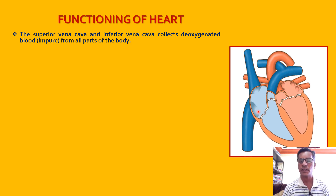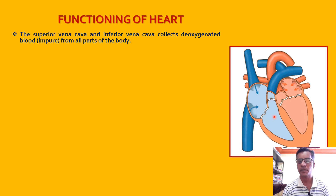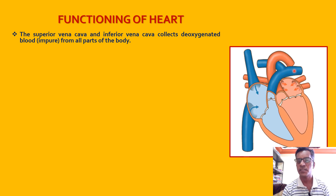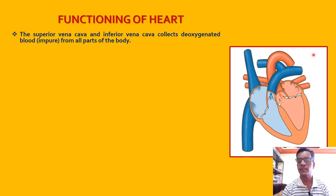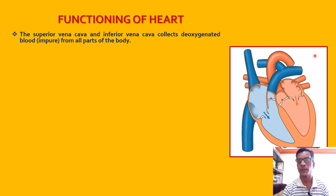The deoxygenated blood is present in the right auricle. On contraction, the blood moves into the right ventricle through a special structure called the tricuspid valve, which allows blood to flow in one direction. As the right ventricle contracts, the blood rushes into a large blood vessel called the pulmonary artery, which carries the blood towards the lungs. In the lungs, exchange of gases takes place - the deoxygenated blood loses carbon dioxide and gains oxygen.